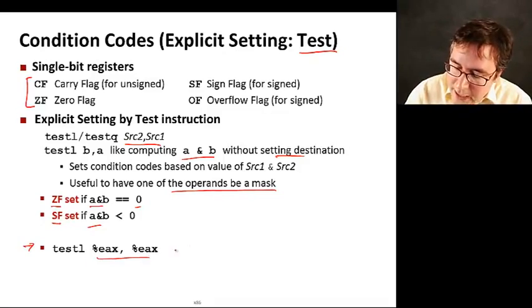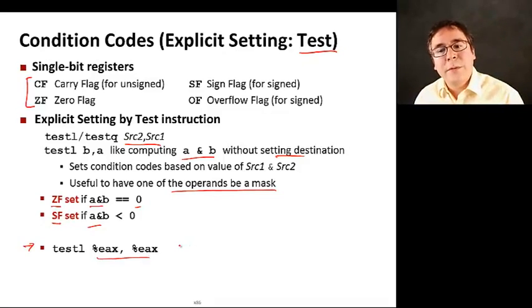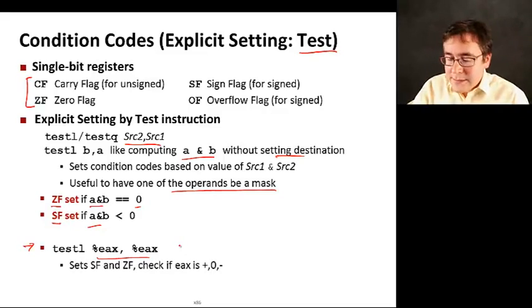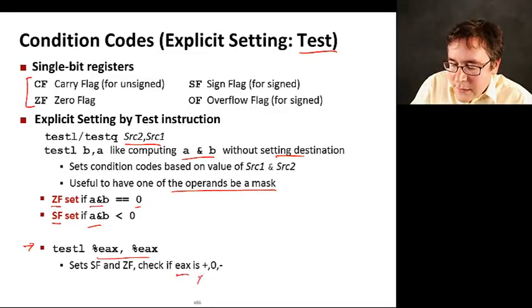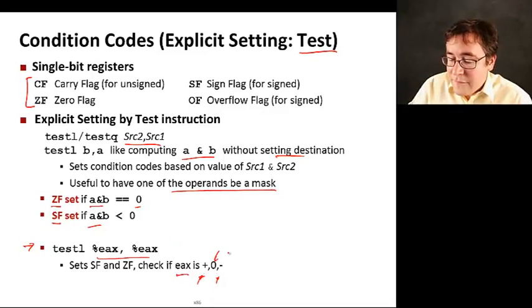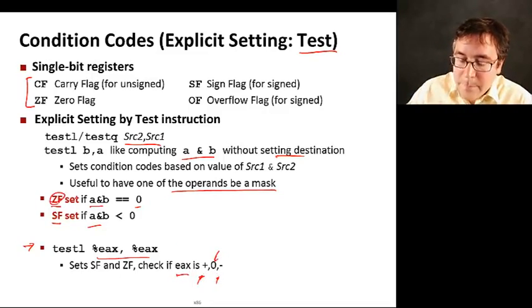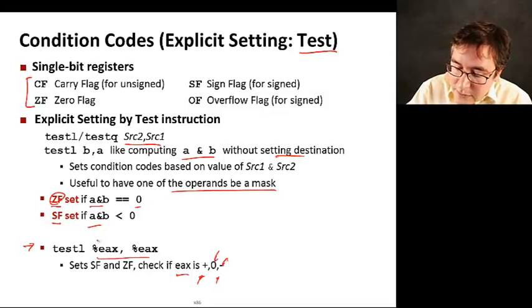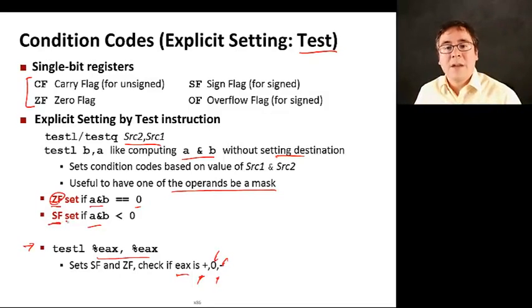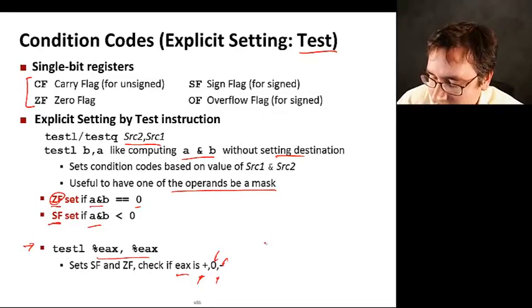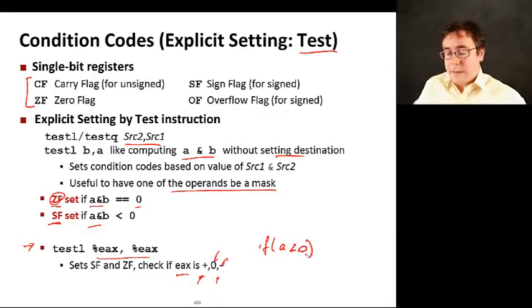Now let's look at this example. We're doing EAX bitwise and with EAX. This is interesting because ZF is going to be set only if EAX is zero, essentially checking whether EAX is positive, negative, or zero. If it's zero, the ZF bit is set. If it's negative, the SF bit is set. This is useful when you have conditions like if A less than zero, which could be implemented with a test instruction.